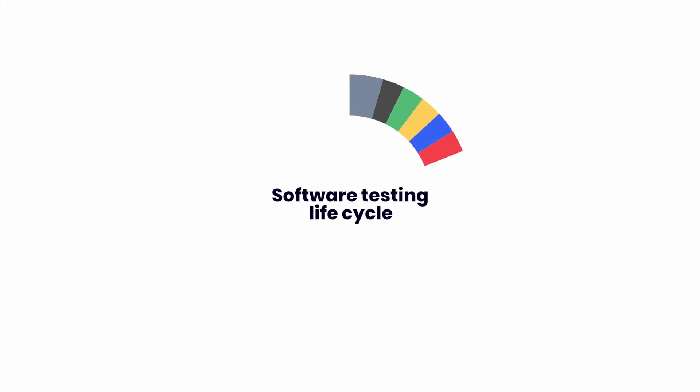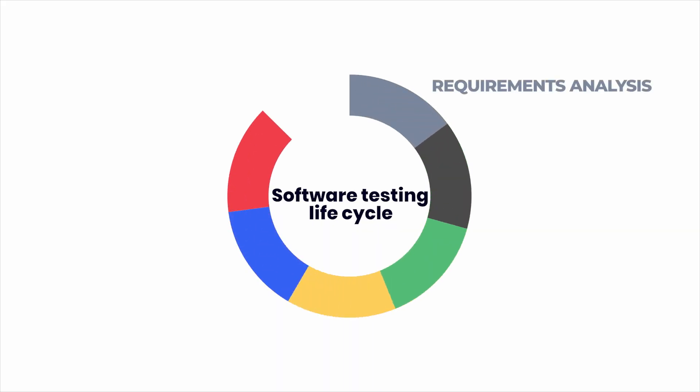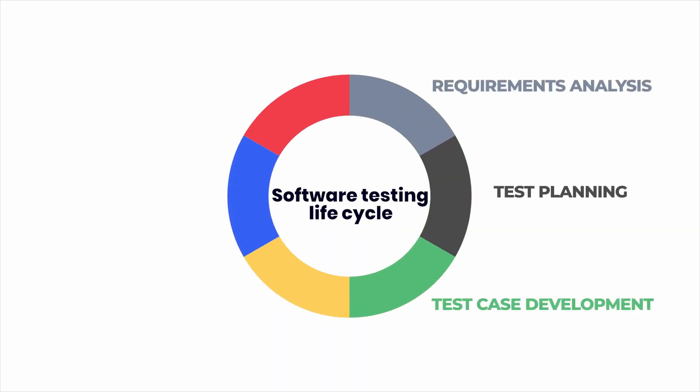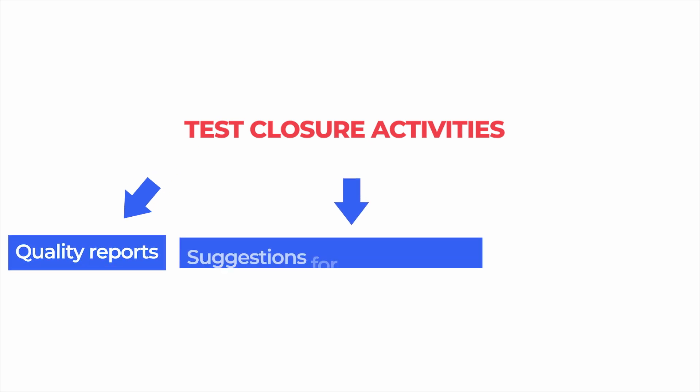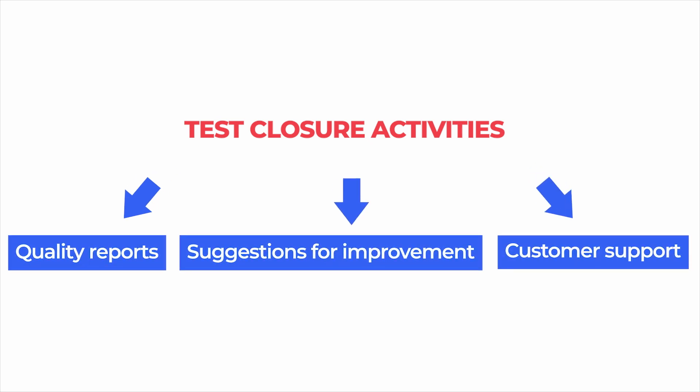The next important question is QA engineer responsibilities. The software testing lifecycle consists of the following stages: requirements analysis, test planning, test case development, test environment setup, test execution, and test closure activities — which include quality reports, suggestions for improvement and, in some cases, customer support. Now let's speak about every testing stage in more detail.